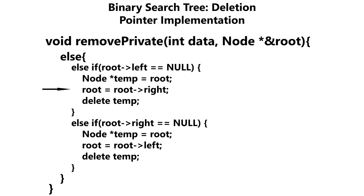If we come down here and the right child is null, that means the node has a left child. Once again, we create a temporary pointer to the node that we want to delete, then advance our root pointer to point to the left child of the node we're about to delete, and finally delete the node.